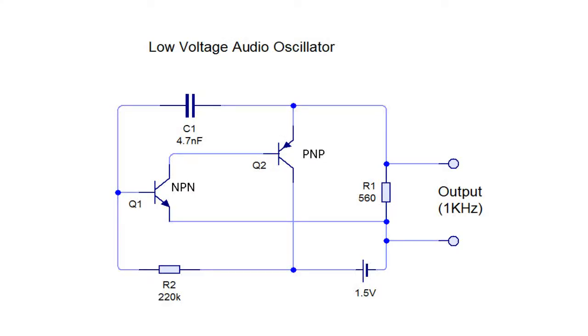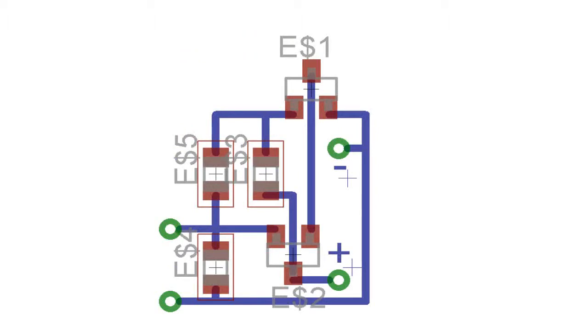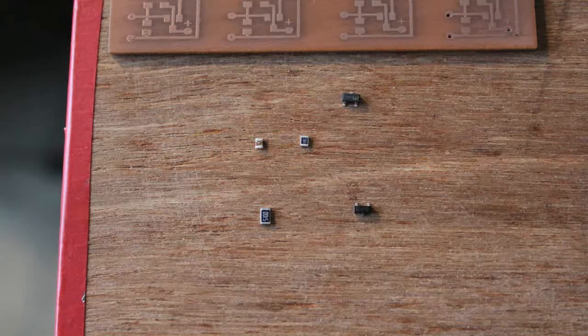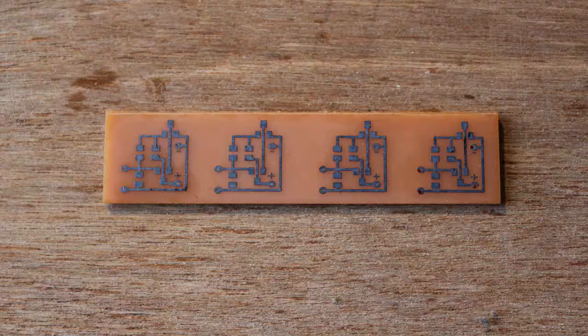This is the circuit diagram. The Eagle CAD layout. Here are the parts. Most NPN and PNP general purpose transistors will be fine.